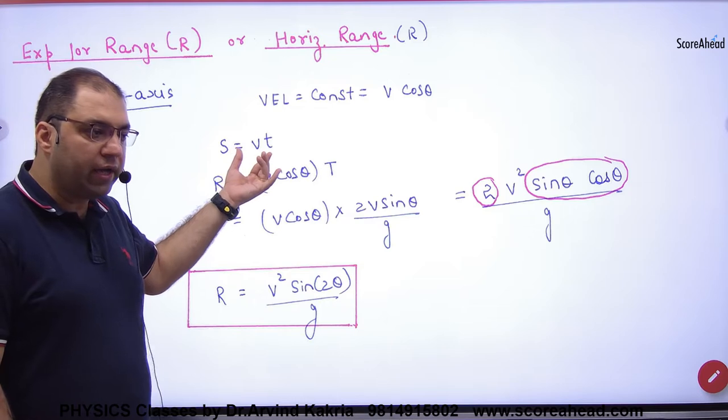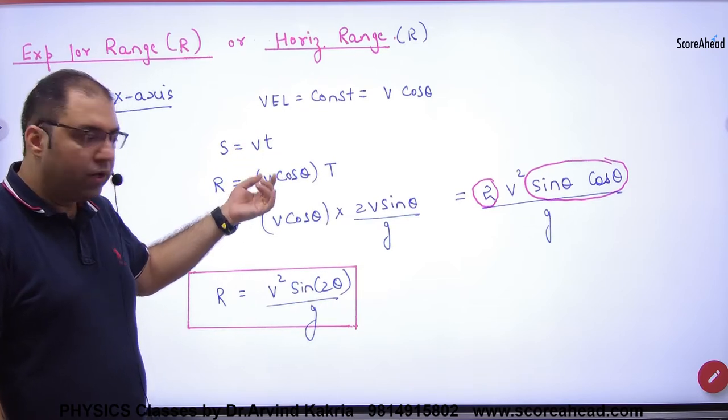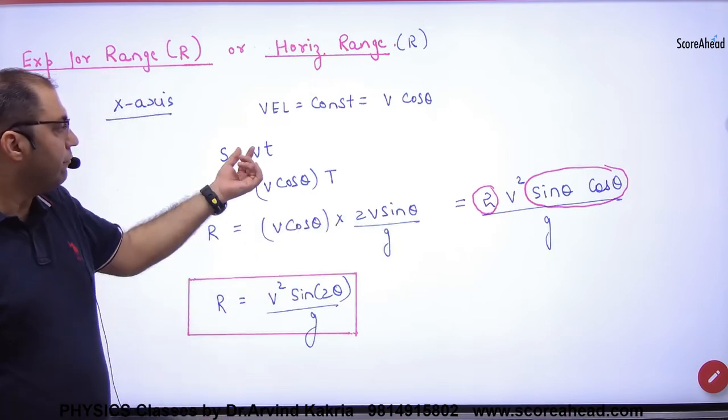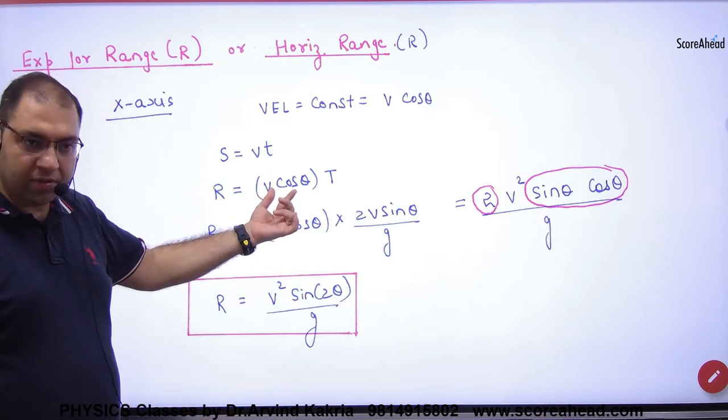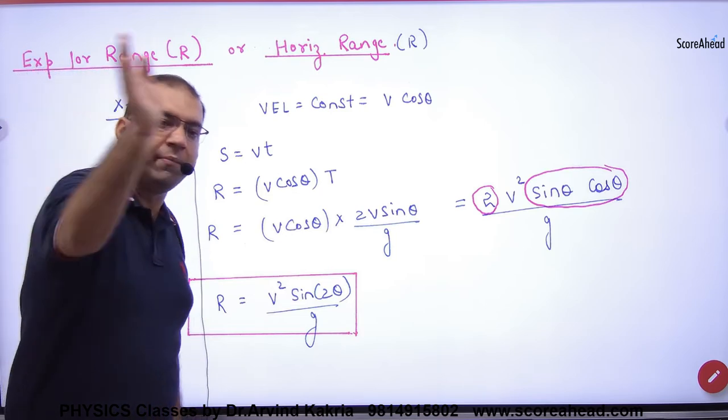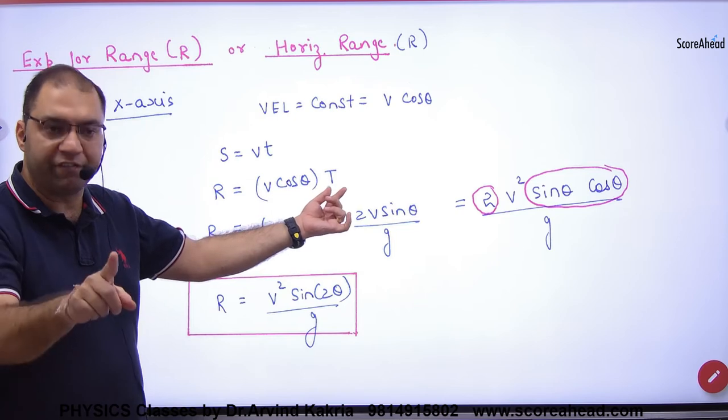The equation: s equals vt. So on the left is R because the whole horizontal distance is R. Velocity is vcos theta because the horizontal velocity remains constant. And total time? Time of flight.